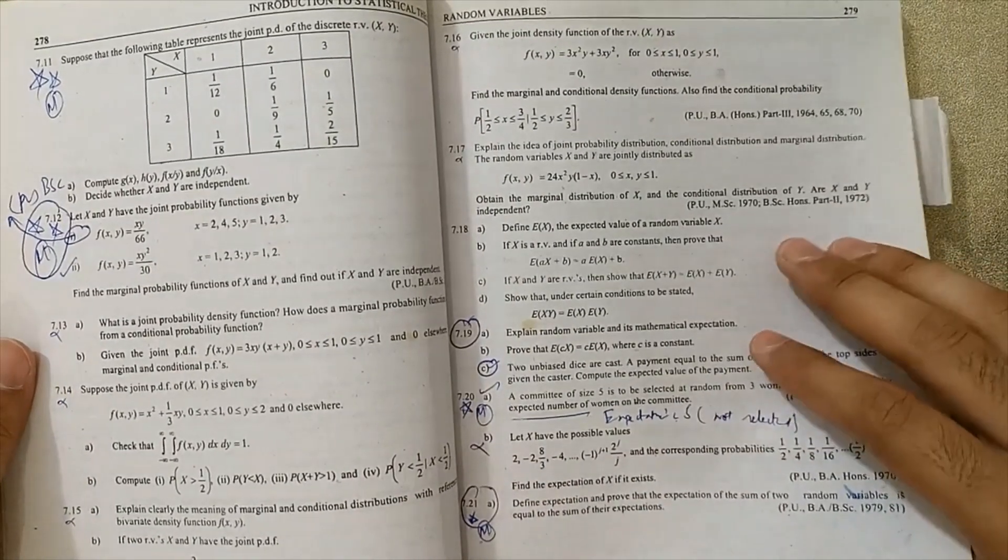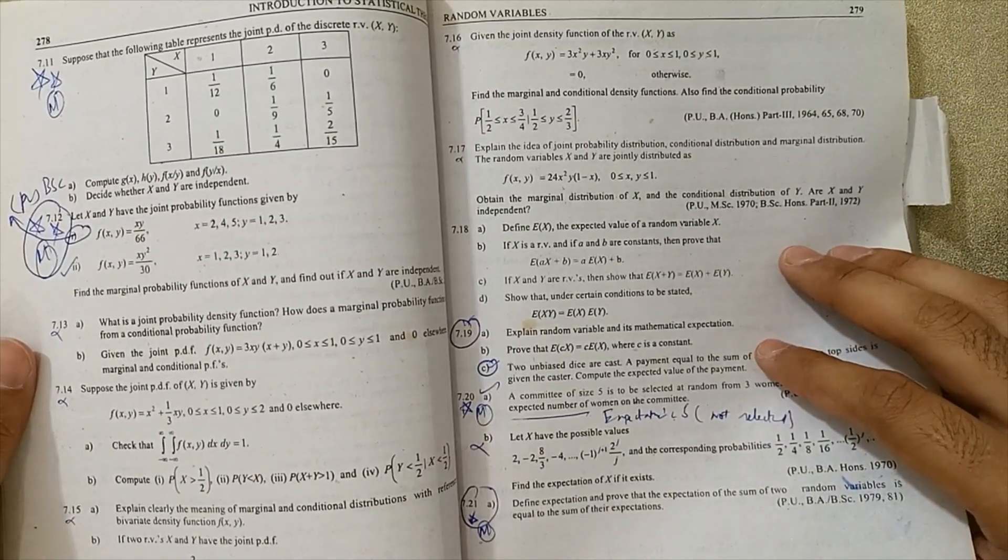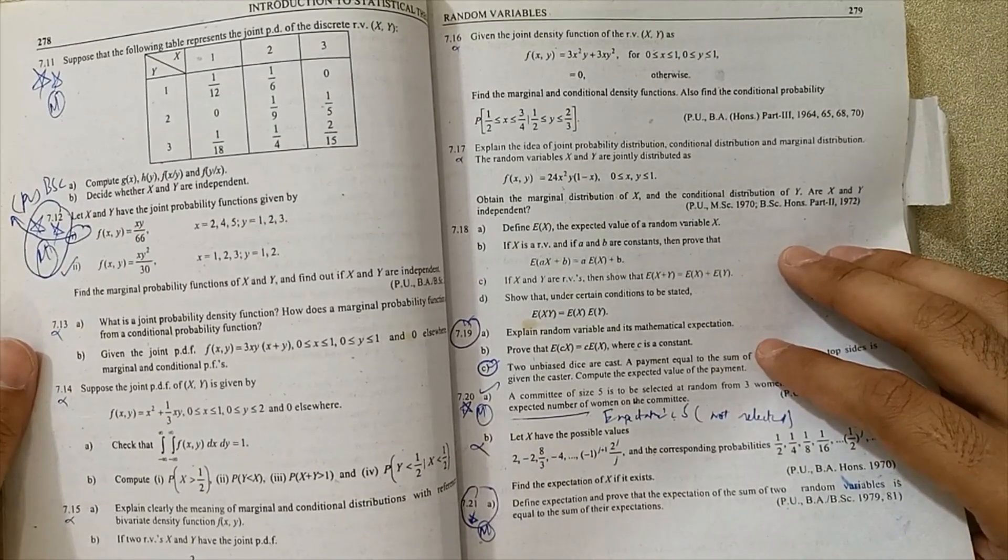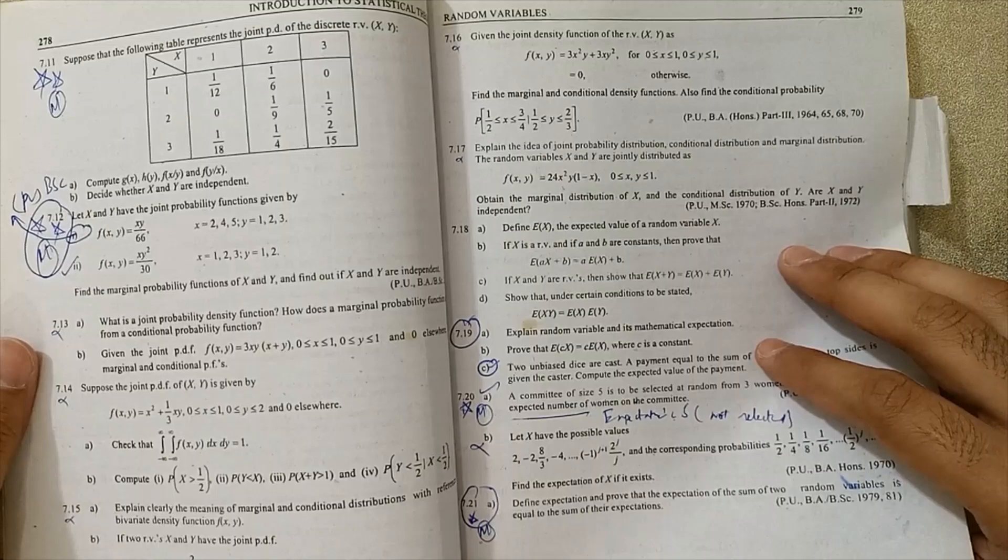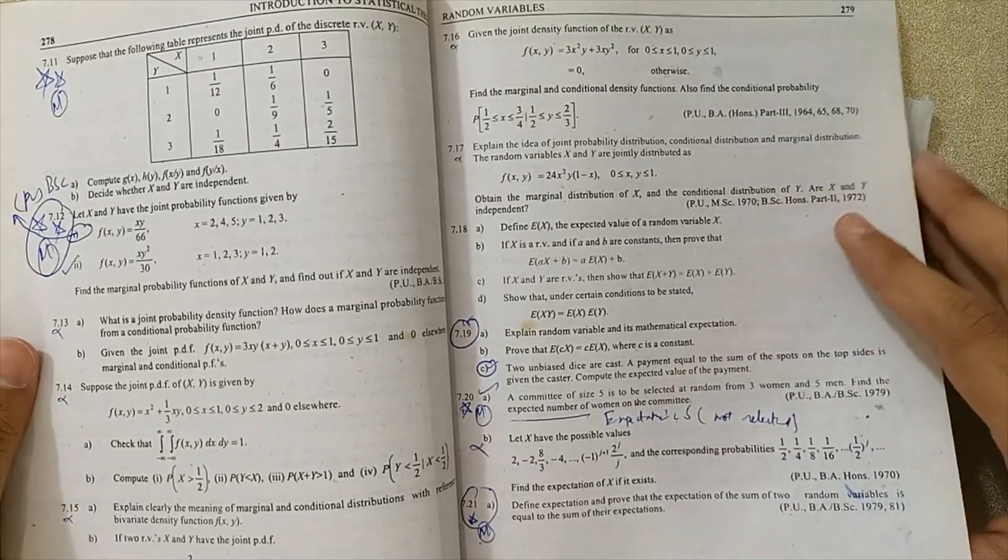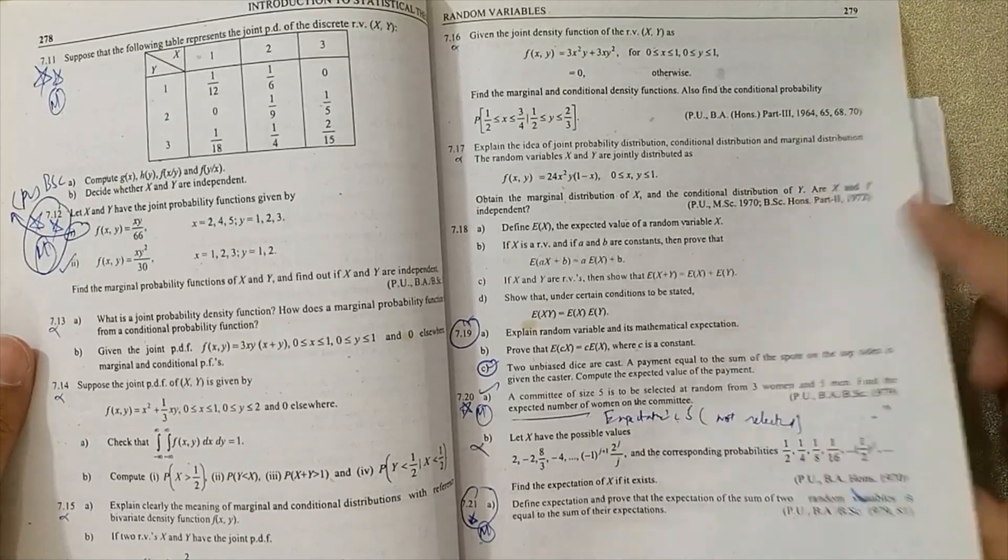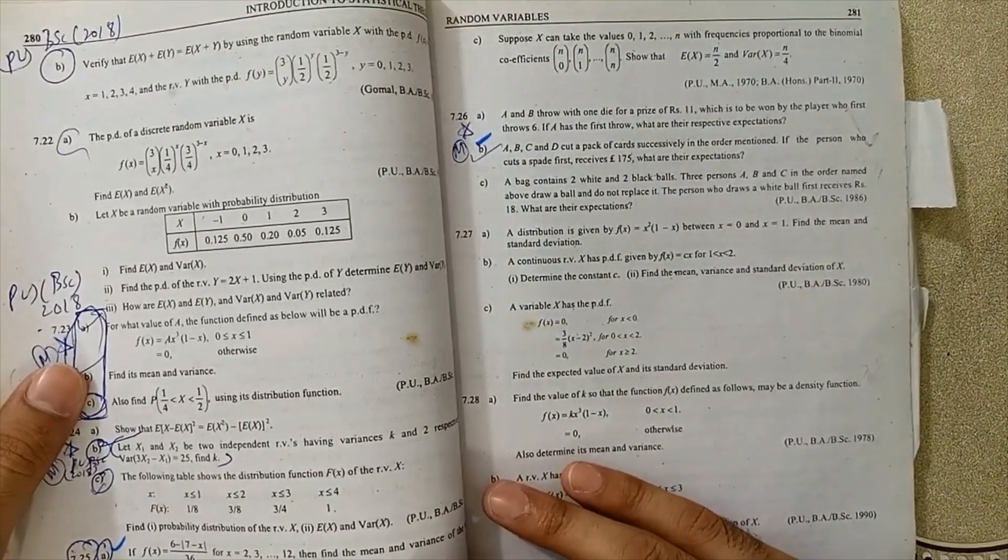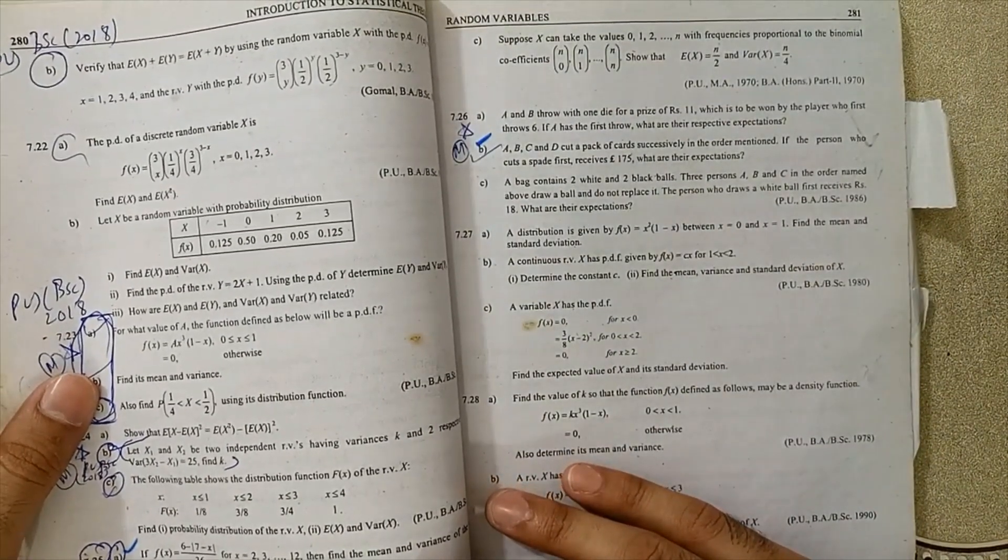These questions repeat every exam, each time the questions repeat. Must practice these questions. 7.19 ABC, 7.20, 7.21, and part B at page 280 is very important.